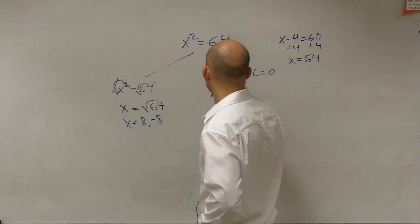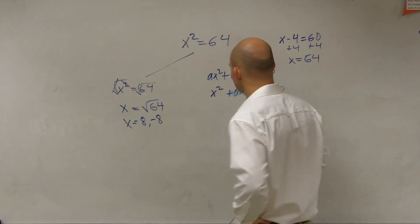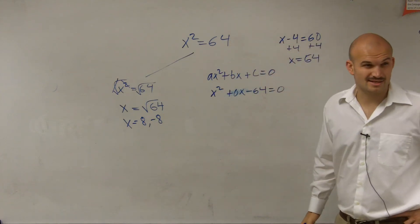Well, can I write it like this? x squared minus x. Let's do this. x squared plus 0x minus 64 equals 0.